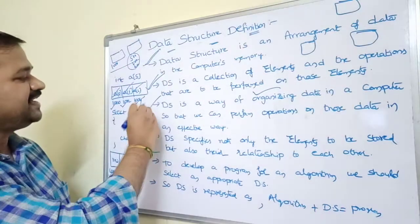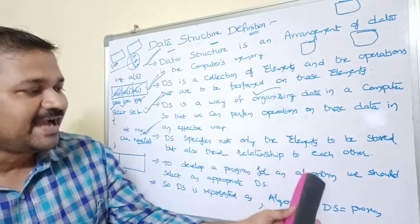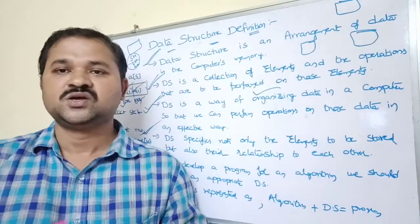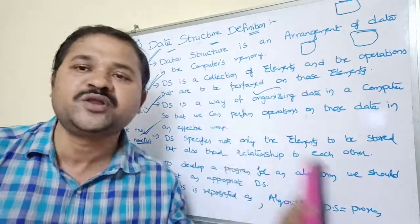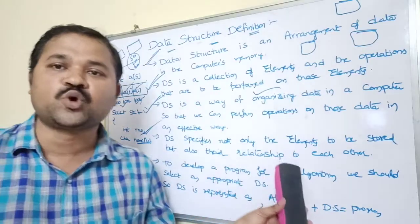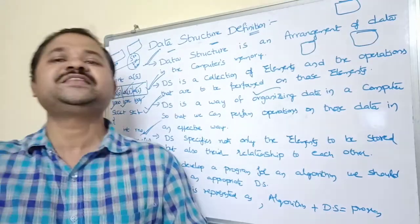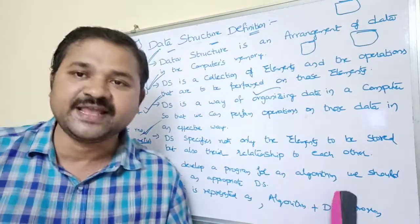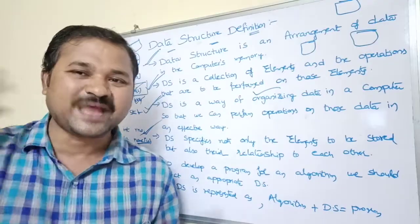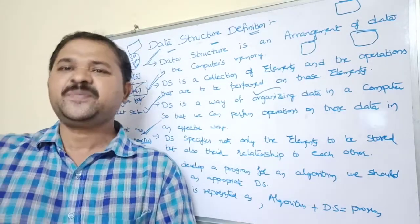So those are the various definitions for a data structure — you can write any one of them in an examination. To develop a program for an algorithm, we should select an appropriate data structure. First we write the algorithm, then to implement it we choose the right data structure — it may be an array, structure, stack, queue, linked list, tree, or graph, depending on the problem.